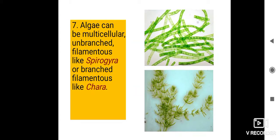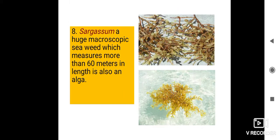Algae can also be multicellular, meaning they have many cells. They can be unbranched, meaning branches are absent, and filamentous — filament-like. Spirogyra, shown in the picture above, is an unbranched filamentous alga. Chara, shown in the second picture, has many branches at certain points. Sargassum is a huge macroscopic seaweed — macro meaning large — found in oceans, measuring more than 60 meters in length. Most algae are small and microscopic, but Sargassum is a large alga.